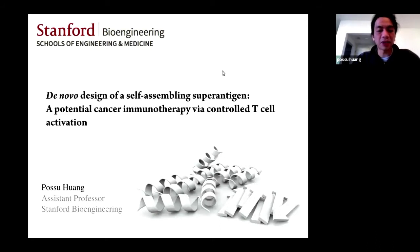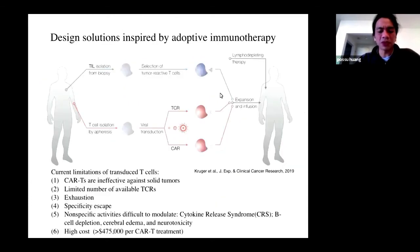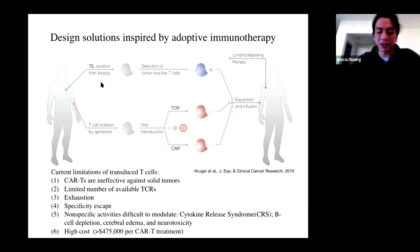I'm very excited to share a project we've been working on for the last few years on the de novo design of a self-assembling superantigen. What we're trying to achieve is to build molecular logic through proteins and use them to achieve controlled activation of T cells. The story begins with the technology for building these protein nanostructures. When we started thinking about challenging issues in cancer immunotherapy, we came across adoptive immunotherapy — the various forms of T cell-based cellular therapy.